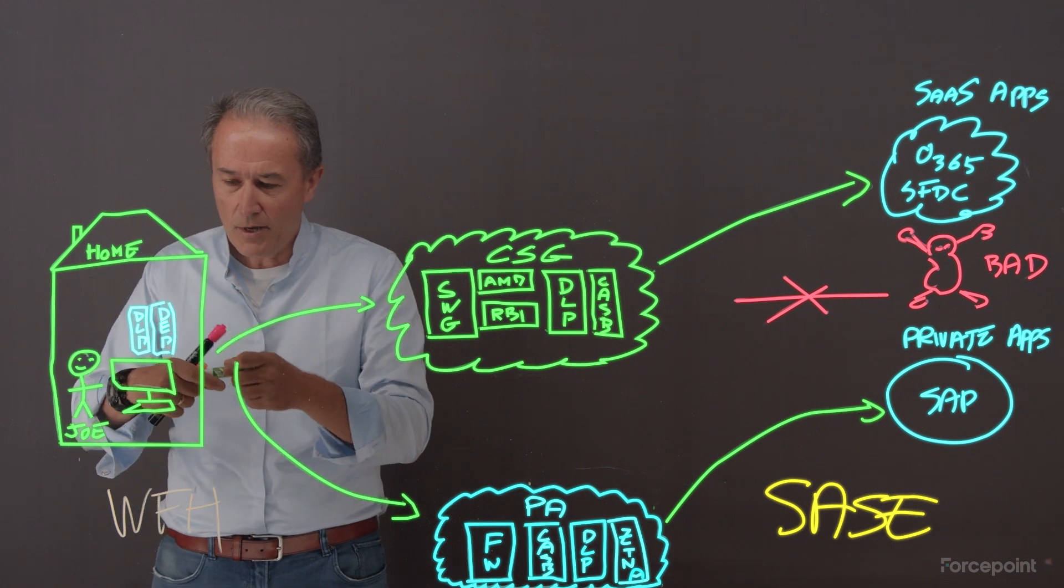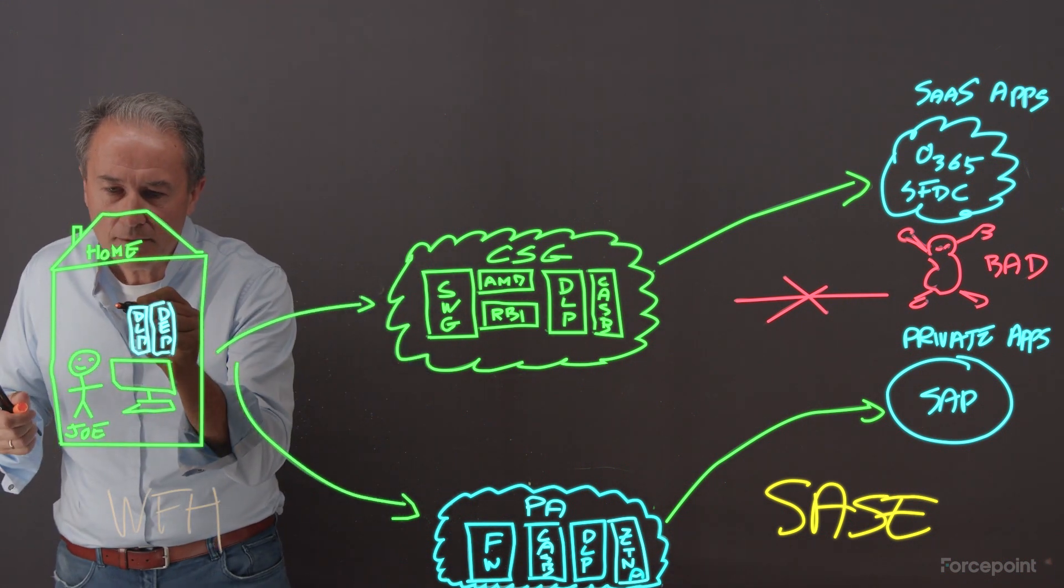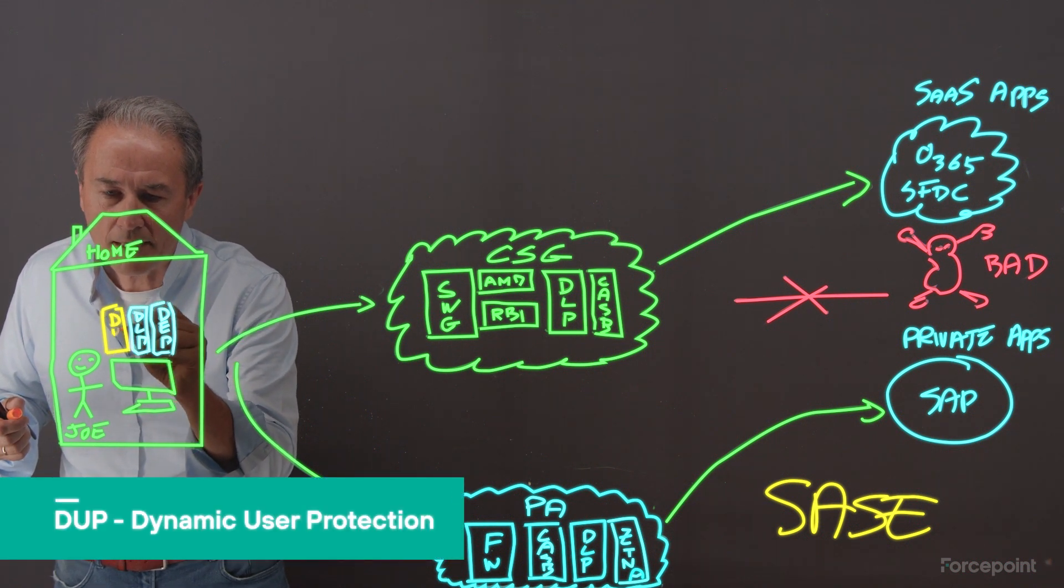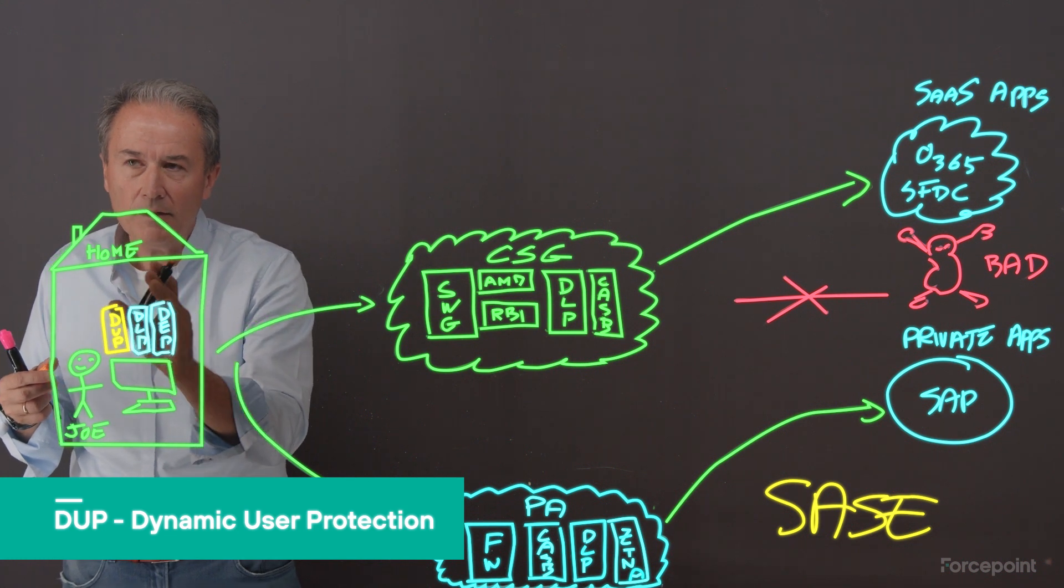So now that unified endpoint is going to become handy because I'm going to add a third blade. I'm going to add user monitoring, we call it DUP, dynamic user protection, alongside the traffic steering and the data protection.